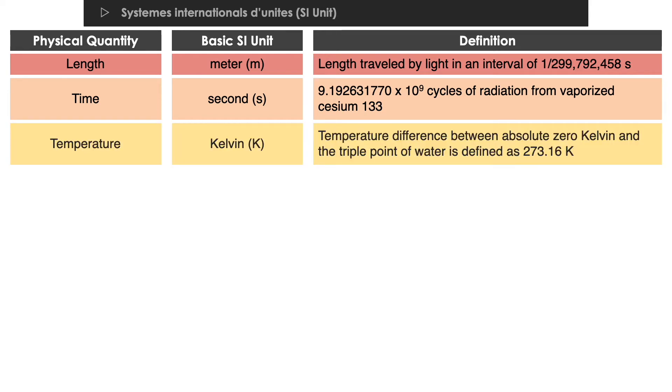Temperature is a quantity that represents the degree of hotness or coldness of a system. The SI basic unit of temperature is Kelvin. 273.16 Kelvin is defined as the temperature difference between absolute zero Kelvin and the triple point of water.